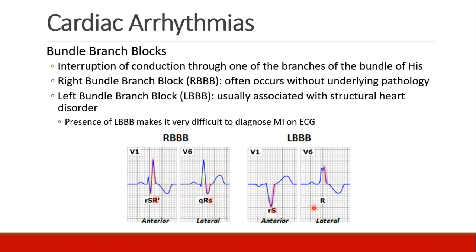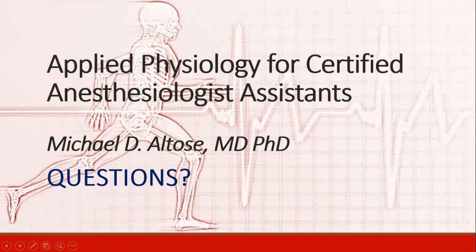Left bundle branch block is a little bit opposite. In V1 there's not much of a Q, a little R, and then a very big scooping S wave. And in V6 you can see the 'rabbit ears' pattern — the double R. That's it for our discussion about EKG abnormalities. Please let me know if you have any questions, and we'll see you again in the next recording.